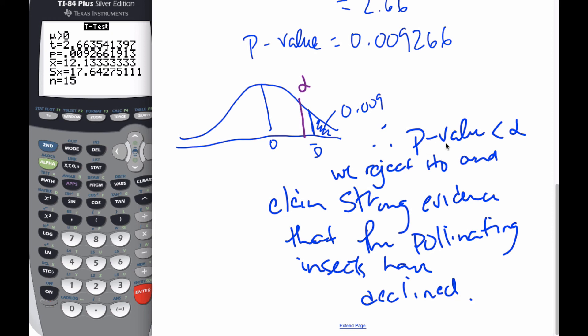So, we make our statement based upon the P-value in alpha. We rejected H0. And then, in context, we claim support of the alternative hypothesis.